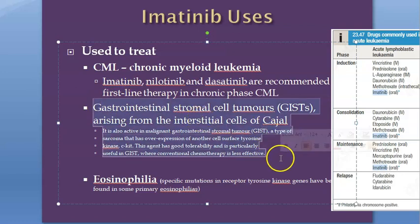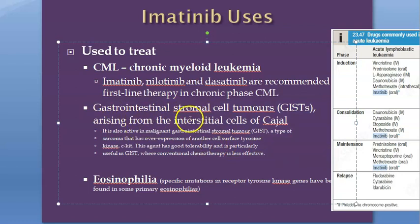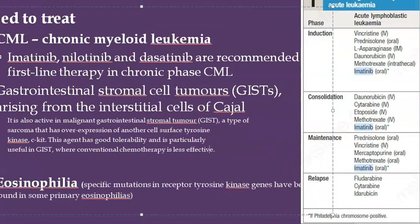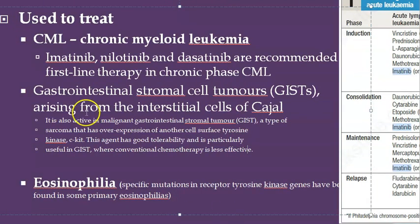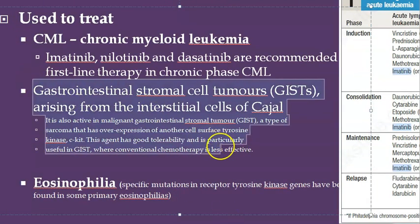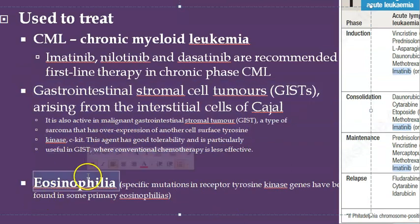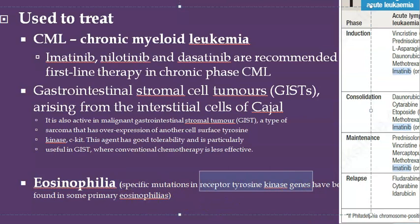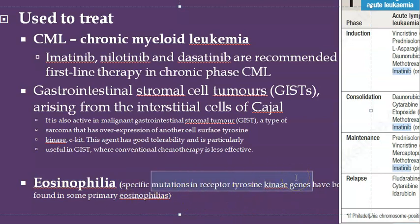Imatinib is also used in the treatment of gastrointestinal stromal cell tumors (GIST), which arise from the interstitial cells of Cajal. If the tumor is large and they want to shrink it preoperatively, they use imatinib. It is also used for control of metastasis. Even for eosinophilia they are giving imatinib, because some eosinophilia is caused by mutations in receptor tyrosine kinase genes.